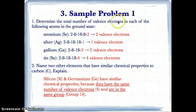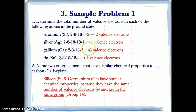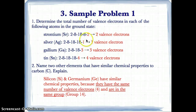Now let's try sample problem 1. Question 1 asks us to find the total number of valence electrons in each of the atoms in the ground state: Sr, Ag, Ga, and Sn. The ground state configurations are 2-8-18-2 for Sr, 2-8-18-18-1 for Ag, 2-8-18-3 for Ga, and 2-8-18-18-4 for Sn. Looking at the last number of each electron configuration: Sr has 2 valence electrons, Ag has 1 valence electron, Ga has 3 valence electrons, and Sn has 4 valence electrons.